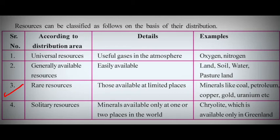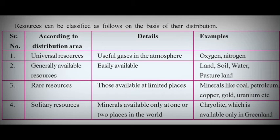Rare resources are the resources which are found or available only at some limited places. Examples are minerals like coal, petroleum, copper, gold, and uranium — these are not available easily or everywhere, so they are called rare resources. The last type is solitary resources — resources which are available only at one or two places in the world. Cryolite is an example; it is a white color mineral found only in Greenland.